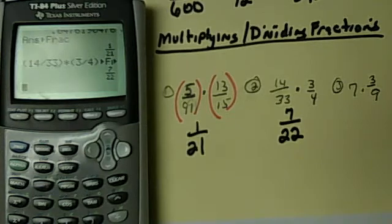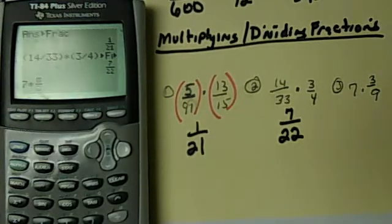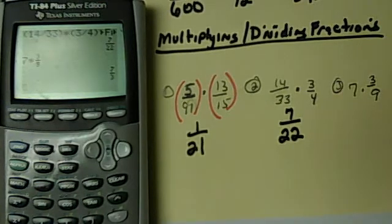Now if you have a whole number you just put the whole number in. So you can put 7 times and if I want to use the upgrade I can go alpha Y equals. And then I can put in 3, go down and put 9, and hit enter. And it's going to give me my answer of 7 over 3.